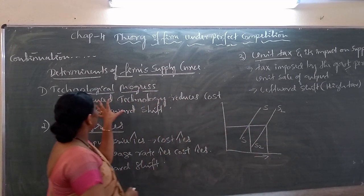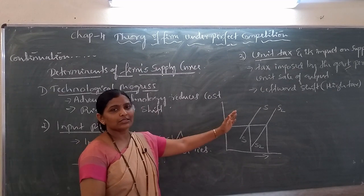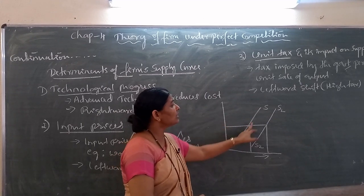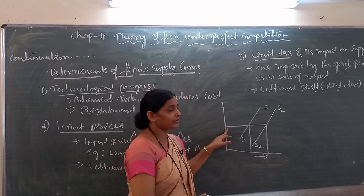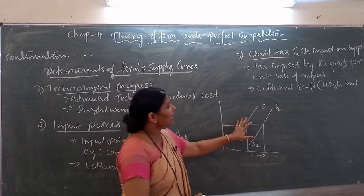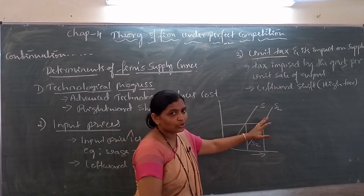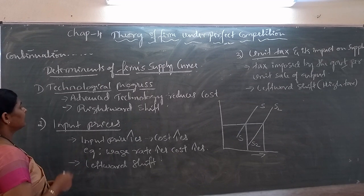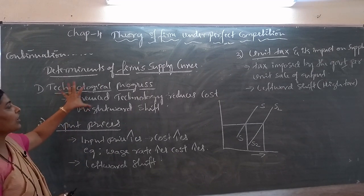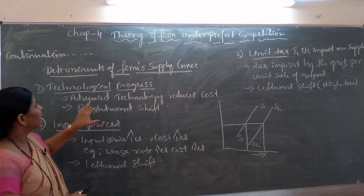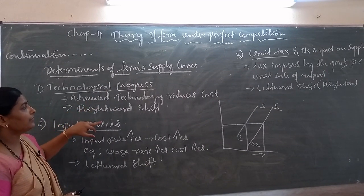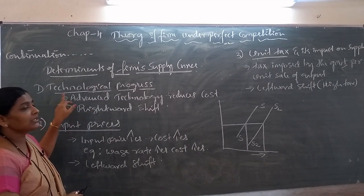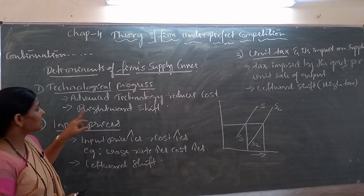If outdated technology is used, then supply decreases — output decreases as well as supply decreases — so the supply curve shifts towards the left. Improved technology can shift the supply curve towards the right. This is what technological progress, and this is important for your exam for one mark: to which side does the supply curve shift if there is an improvement in technology or if improved technology is used in production? The answer is rightward shift.